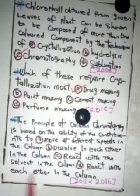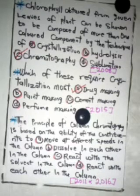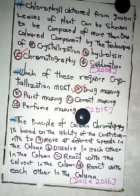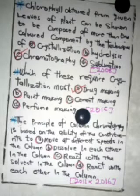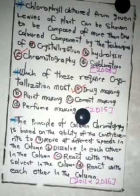The next question: the principle of column chromatography is based on the ability of the constituents to — move at different speeds in a column, dissolve in each other, react with the solvent, or react with each other? The answer is A: move at different speeds in a column. There are two phases at play — the mobile phase and the stationary phase — and it is the interactions of the components with these phases that makes them move at different speeds.